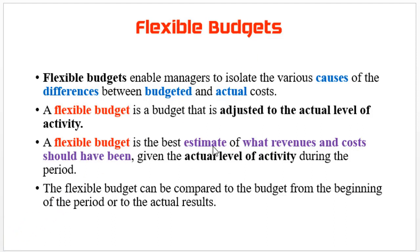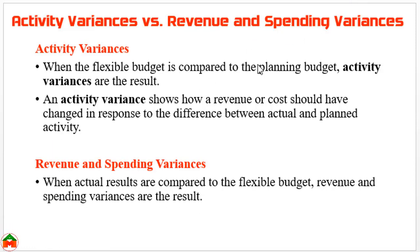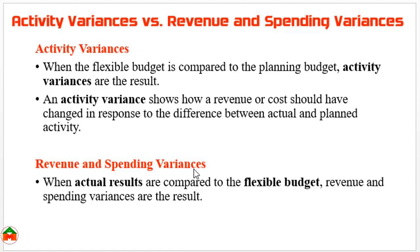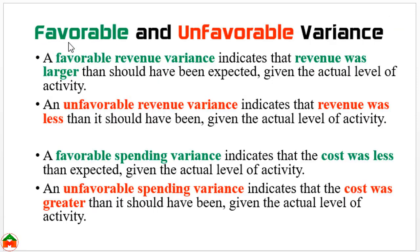A flexible budget can be compared to the planning budget for performance analysis. By doing this comparison we find two types of variance: one is activity variance, and the other is revenue and spending variance. Activity variances are found by comparing the planning budget with the flexible budget. Revenue and spending variances are found by comparing the actual results with the flexible budget.